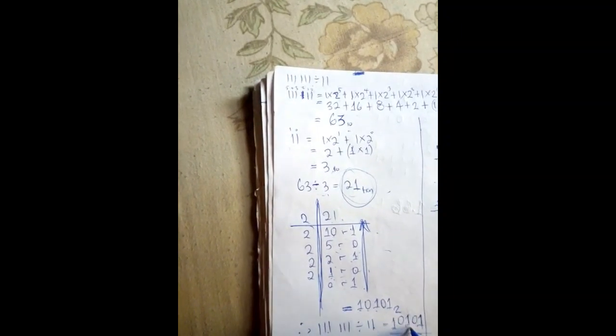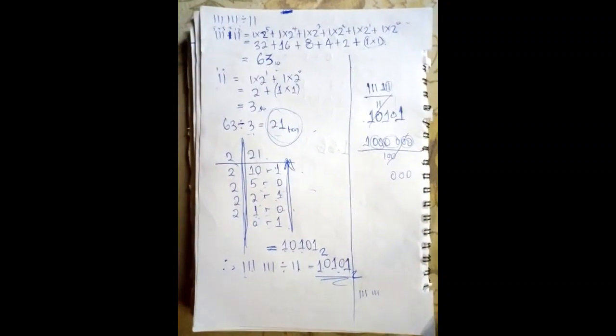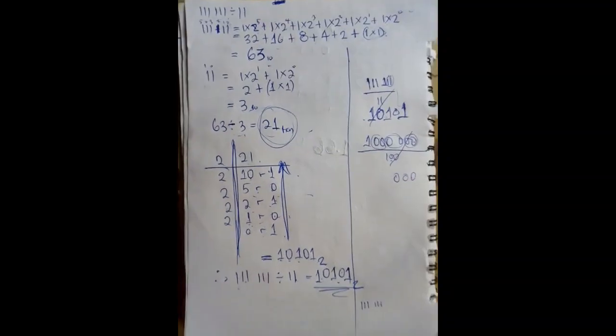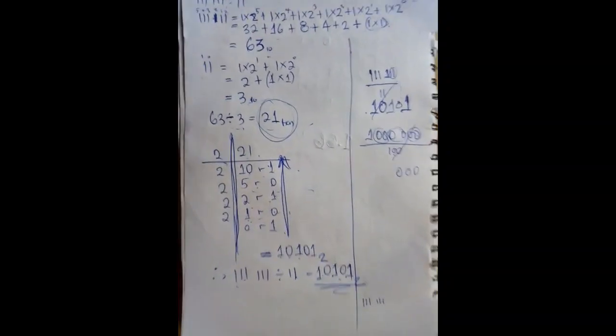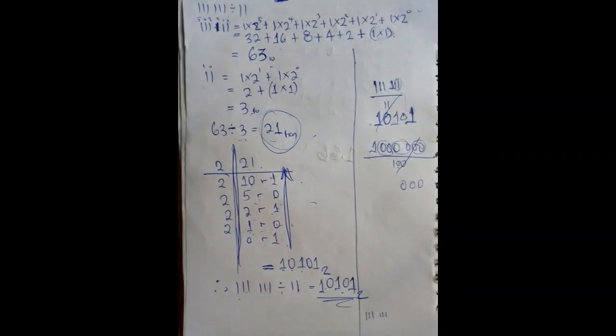So one one one one one one divided by one one in base two gives you one zero one zero one in base two. That's it for addition, subtraction, multiplication, and division of numbers in base two. If you have any questions, drop them in the comment box or send us an email. I hope the class was interesting — see you in the next class.